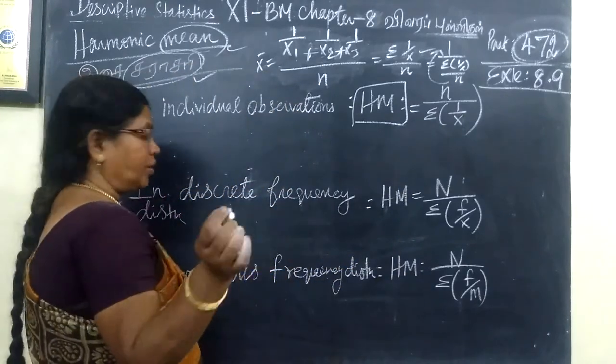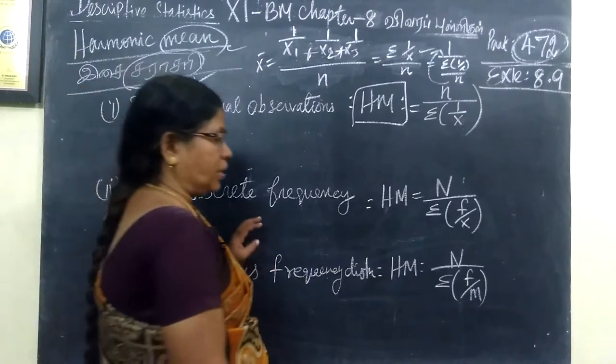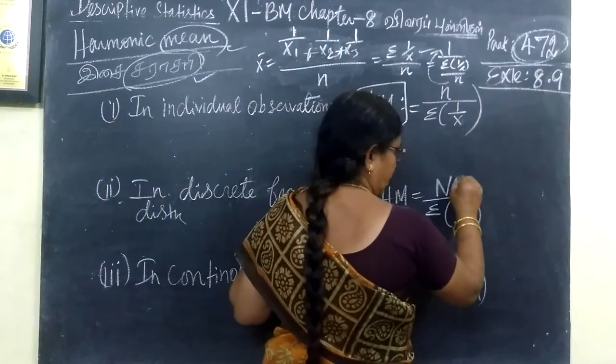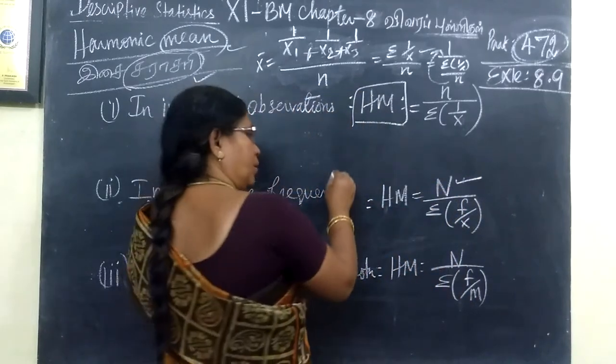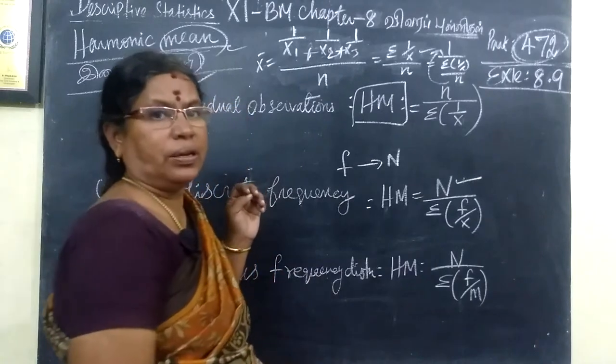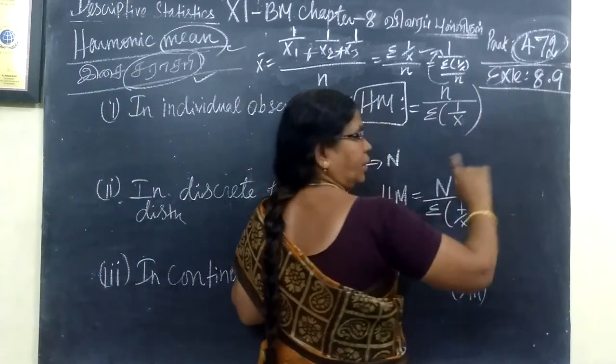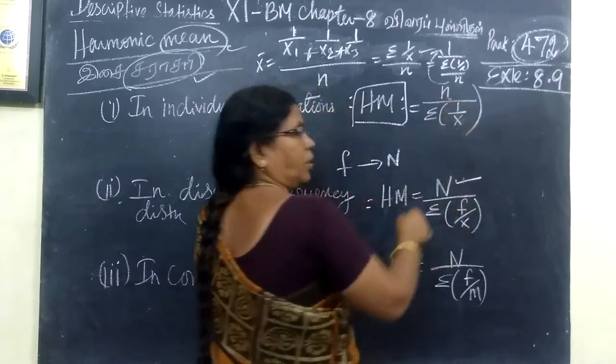Then sorry. In discrete frequency, capital N. What is the frequency? Capital N. This is the observation. You are using small n.